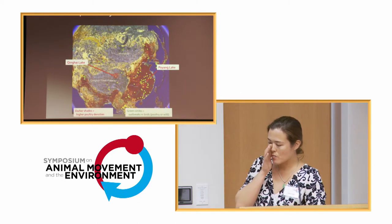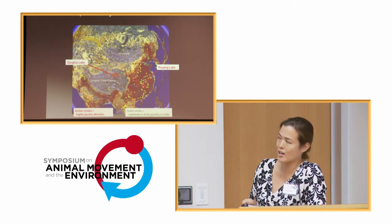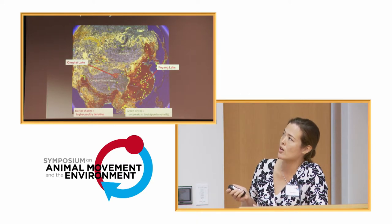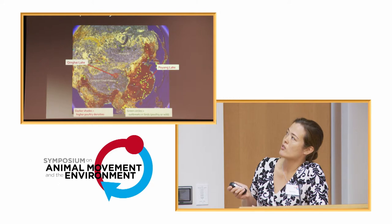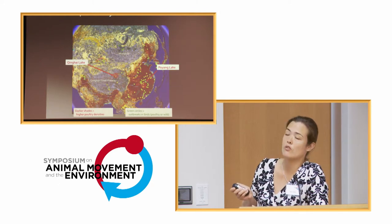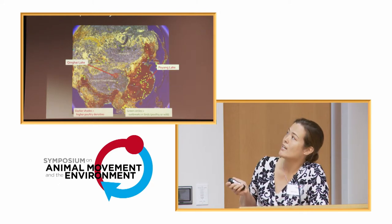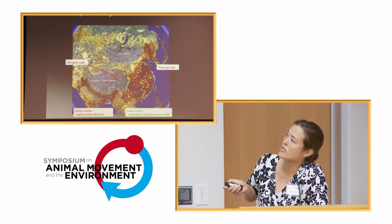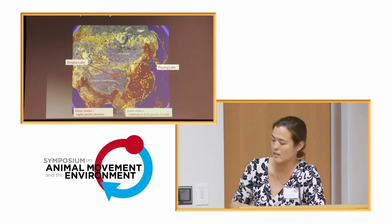This is a really striking figure. You're seeing poultry densities in brown - here's Poyang Lake in China. You can see there really isn't much poultry in the Central Asia Flyway on the Tibetan Plateau and Mongolia. But as you go farther south within the Central Asia Flyway, you do have poultry within India.